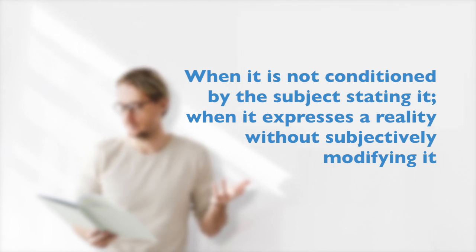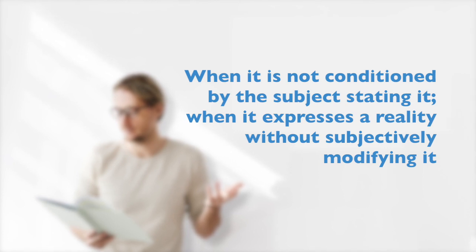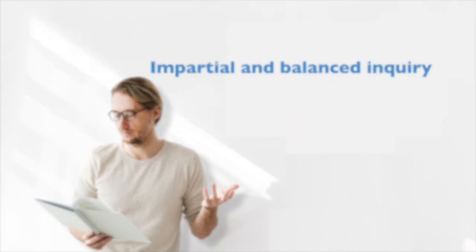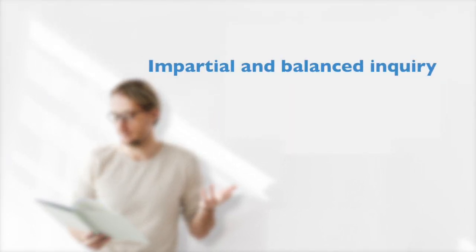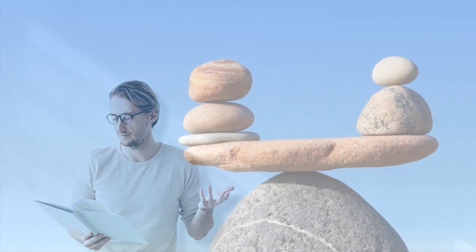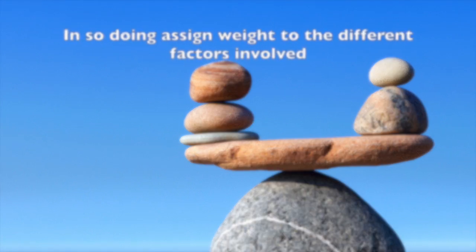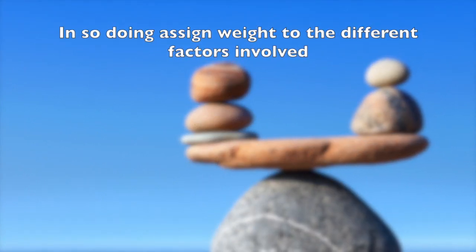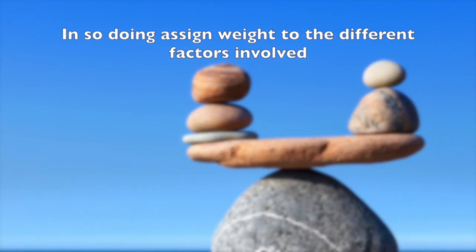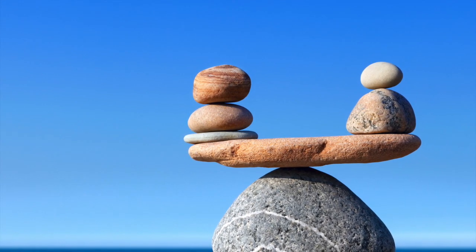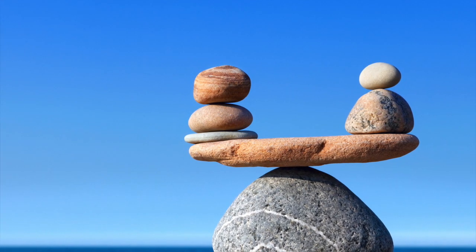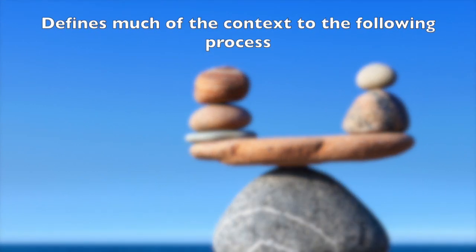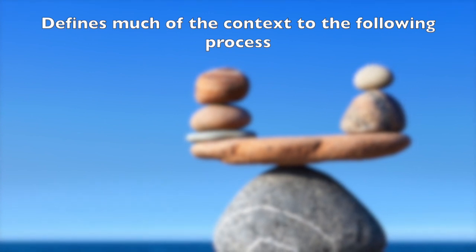When it expresses a reality without subjectivity modifying it, objective thinking implies an impartial and balanced inquiry. In reasoning, one has to define what is of value and relevance, and in so doing assign weight to the different factors involved. This assigning of importance to the different factors then defines much of the context to the following process of reasoning.